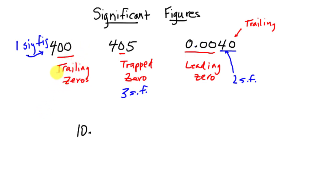But the rules are: non-zero digits count. The fours, the fives count. Zeros count if they're trapped in between two non-zero digits, they will always count. Leading zeros never count. So those are your two always statements: always and never. Trailing zeros count if there's a decimal present. So if I wrote 400 with the decimal, that's now three significant figures.